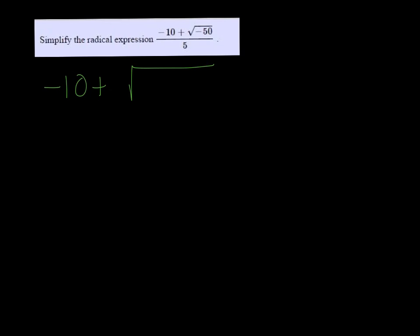Now we want to think about some factors of 50, and particular ones that might be a perfect square. So remember that 25 goes into 50, and 25 is also a perfect square, so we're going to change it to negative 25 times 2.